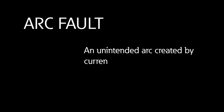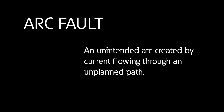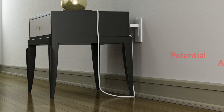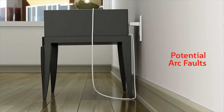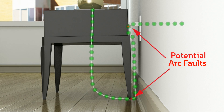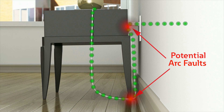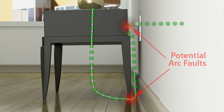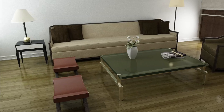An arc fault is an unintended arc created by current flowing through an unplanned path. Arcing creates excessive heat that can easily ignite surrounding material, such as wood framing or insulation, resulting in a hazardous situation.